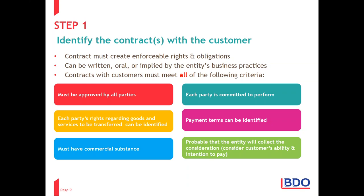Another important criterion — in the light green block — is that it's probable that the entity will collect the consideration, and we consider the customer's ability and intention to pay. If it's not probable on day one when you enter into this contract, you don't meet the requirements for a contract in step 1, and you cannot recognize revenue. You can only move on to steps 2 through 5 if it's probable that you'll collect the consideration.